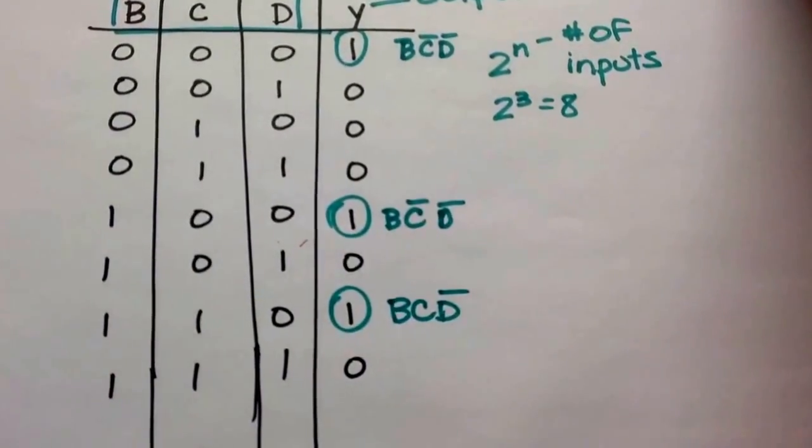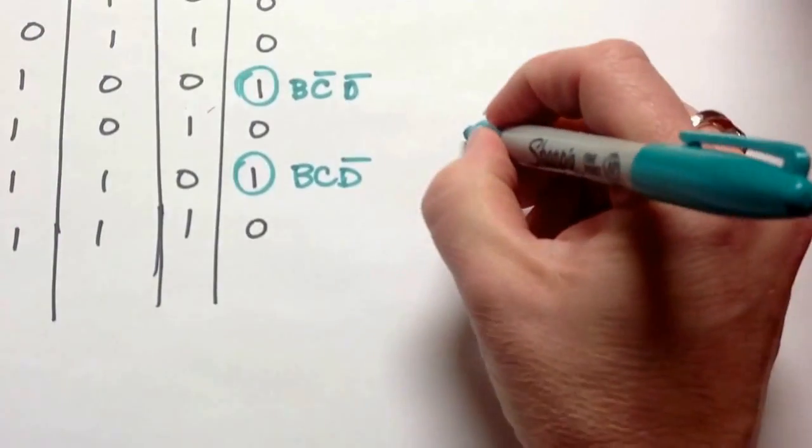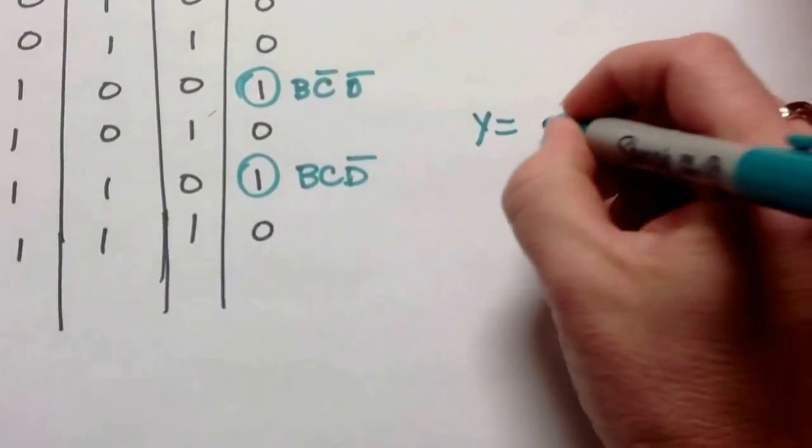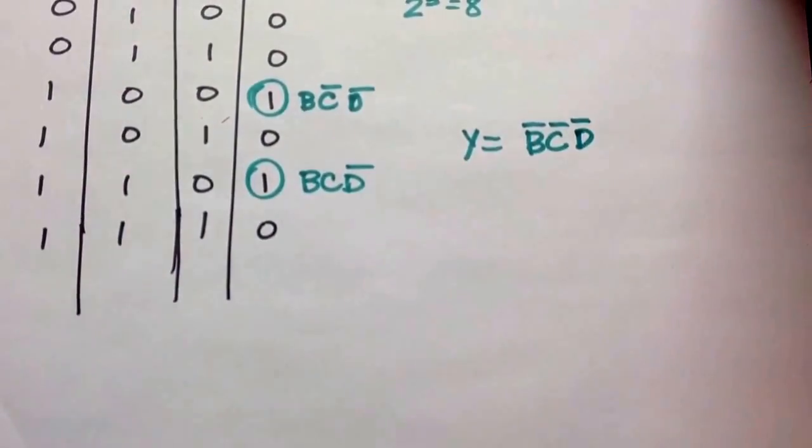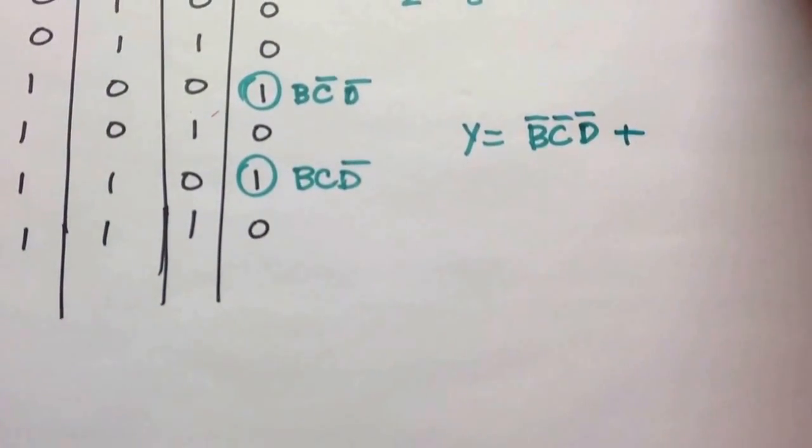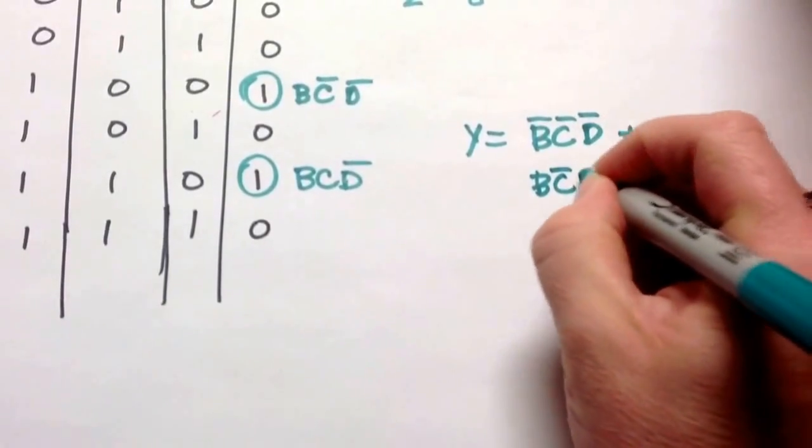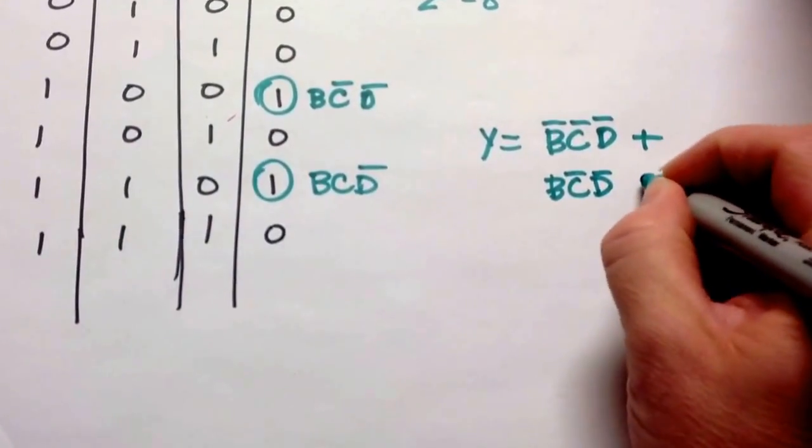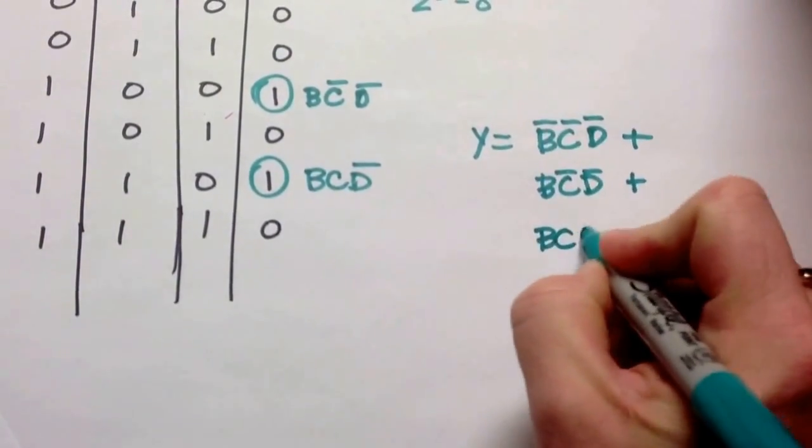So to write the logic expression for this, it would simply be Y equals not B, not C, not D, or B, not C, not D, or B, C, not D.